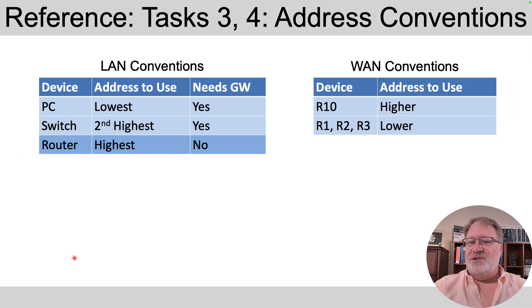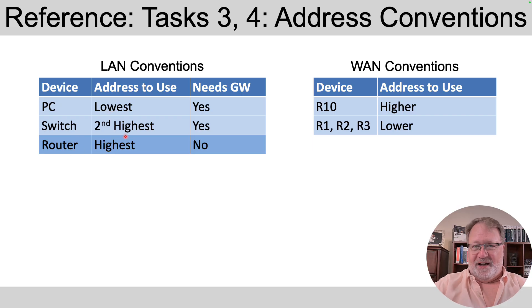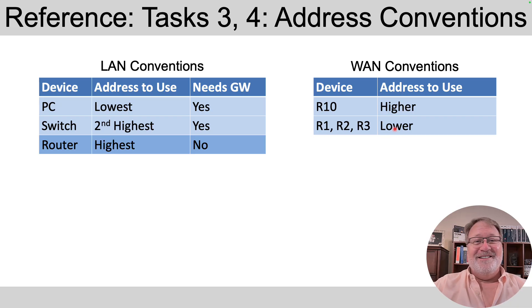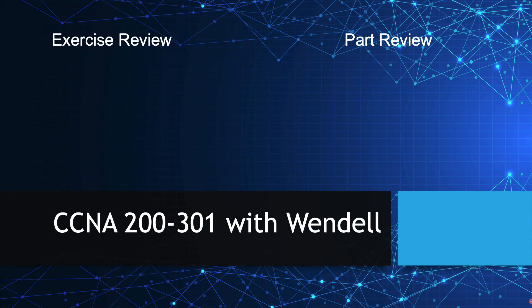For IP address selection: in LANs, the PC gets the lowest address, the router gets the highest, and the switch gets the second highest. On WANs, give Router R10 the higher address and the branch routers the lower address. That's all the reference information you need — go ahead and do the exercise. You should definitely do the exercise yourself first, then click to the left for the answer video and bookmark it to review once you're done. And don't miss the part review linked on the right, which gives you a plan for mastering all your subnetting math. Hope you're enjoying the content — talk to you soon.